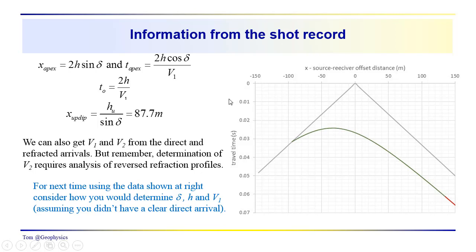For next time, spend some time trying to figure out the parameters delta, H, and V1 from the observations. This is referred to as the reverse problem — what you usually end up doing with your data. You go out in the field, collect data, and try to figure out the properties of the subsurface. What we just did was the forward problem: we showed that the reflection event from a dipping layer has an apex up-dip, terminates against the direct arrival, and we derived the relationships you can use to find H, delta, and V1. Thanks for joining us.